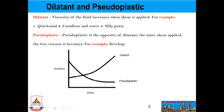Pseudoplastic is the opposite of dilatant. The more shear applied, the less viscous it becomes. For example, ketchup is a pseudoplastic fluid.